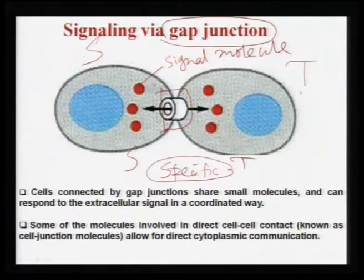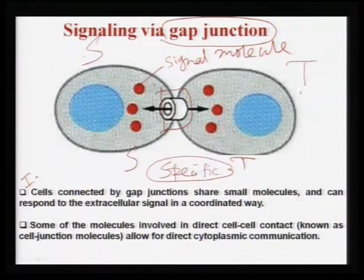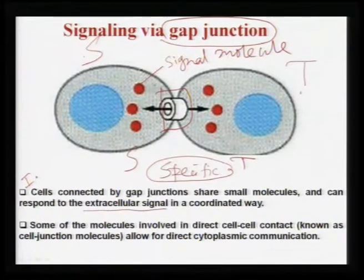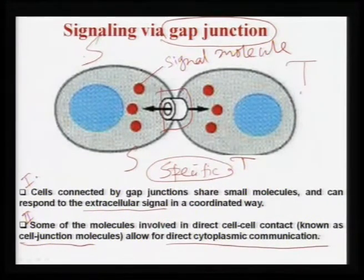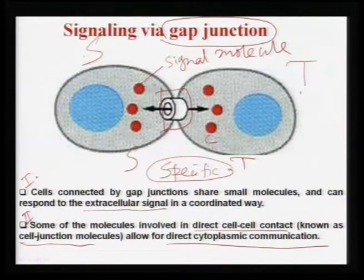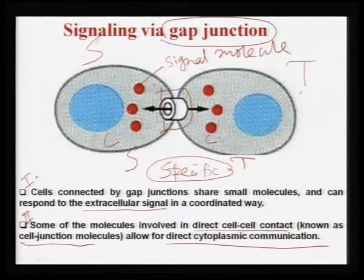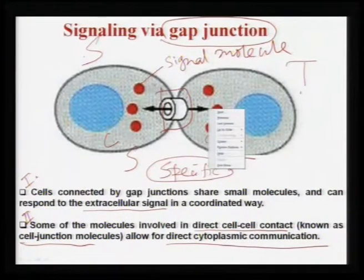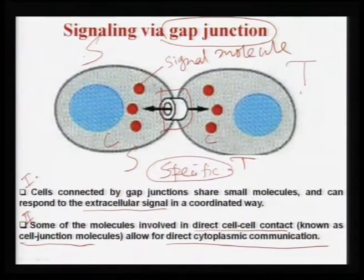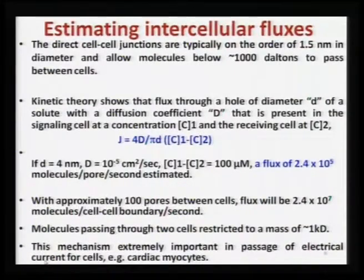Cells connected by gap junctions share small molecules and can respond to extracellular signals in a coordinated manner — through very direct cytoplasmic communications. Like molecules in direct cell-to-cell contact, signal molecules transported between these cells in a reversible manner can directly communicate to the cytoplasm.